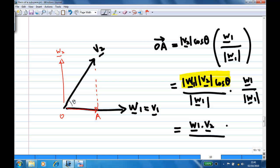And the length, when I multiply the denominator, is precisely w1 dot w1. Because the angle between w1 and w1 is 0. This is how we get OA.